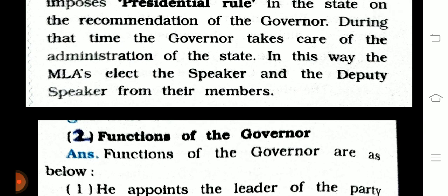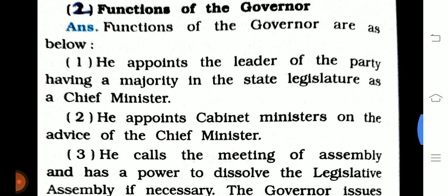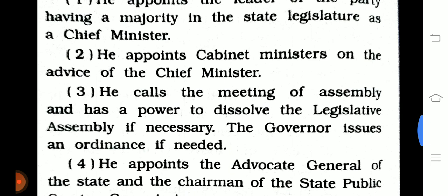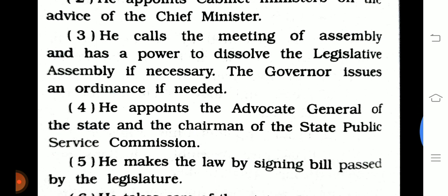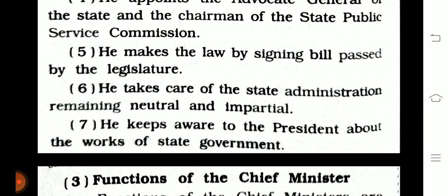Question 7, part 2: Functions of the Governor. The governor appoints the leader of the majority party in the state legislature as chief minister. He appoints cabinet ministers on the advice of the chief minister. He calls assembly meetings and has power to dissolve the legislative assembly if necessary. He issues ordinances if needed, appoints the advocate general and chairman of the state public service commission, signs bills passed by the legislature, and keeps the president informed about the work of the state government.